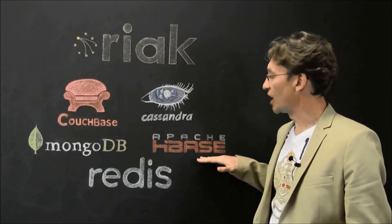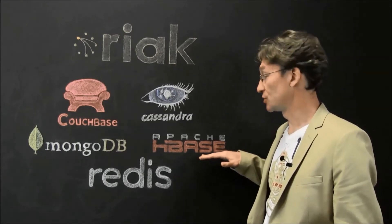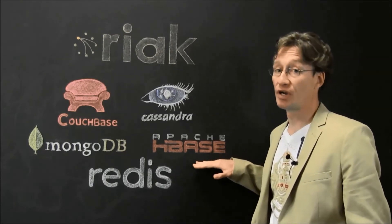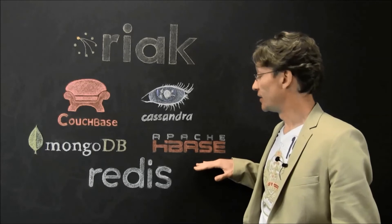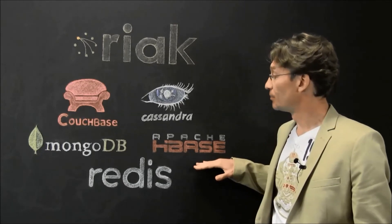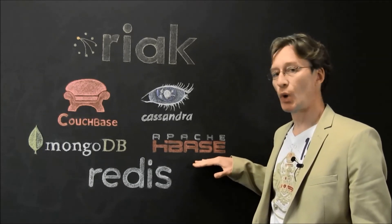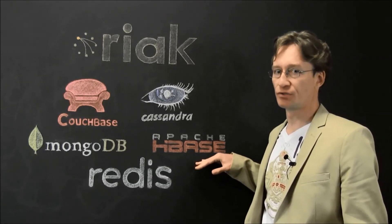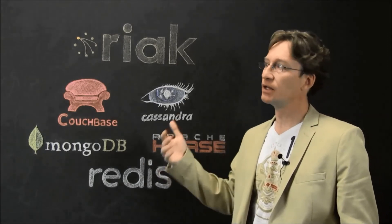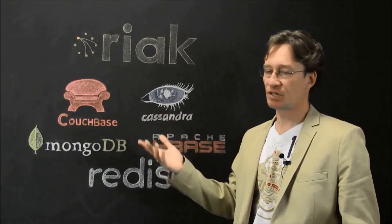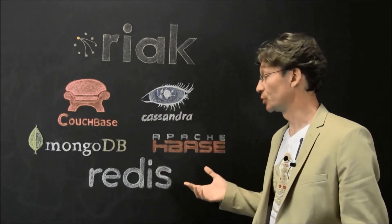Apache HBase is actually part of the Hadoop set of systems, deployed on top of HDFS, and is designed for when you need to access data in a more random fashion rather than processing massively large amounts of data in bulk like you traditionally do with Hadoop.